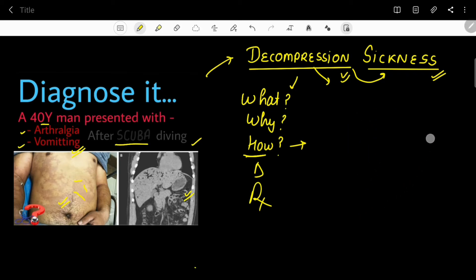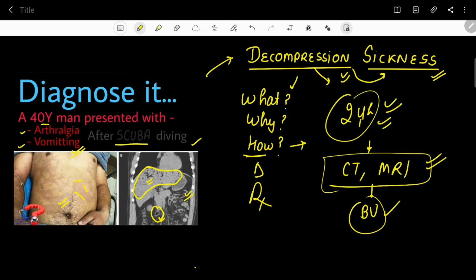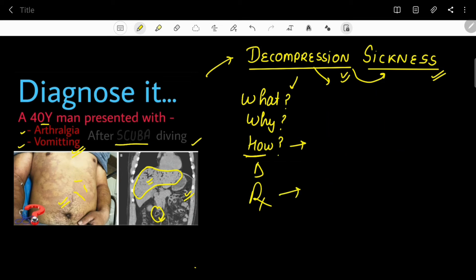For diagnosis, there should be a history of these symptoms occurring within 24 hours of diving, caisson work, aircraft, or spaceship exposure. Investigations include CT scan or MRI, which can show the presence of air in various organs — as seen here with the black-colored area representing air in the hepatic circulation. Air can be visualized inside blood vessels on CT/MRI. However, the diagnosis is primarily clinical, with imaging as a supportive tool.